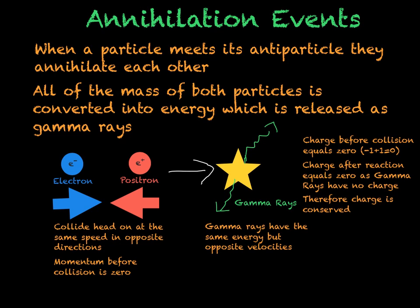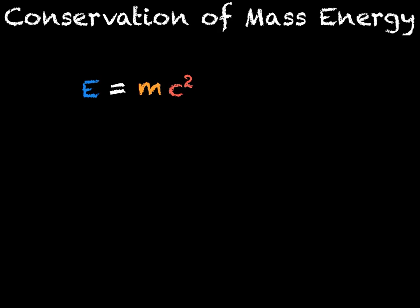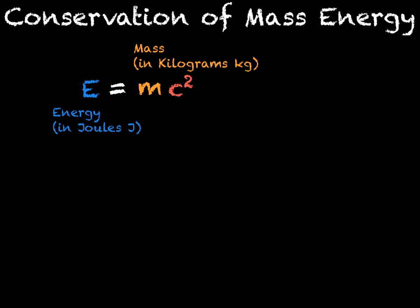The final thing we will look at is how mass-energy is conserved using Einstein's most famous equation. Einstein said that mass is a form of energy, so we use E equals mc squared, where E is energy in joules, m is mass in kilograms, and c is the speed of light, 3 times 10 to the 8 metres per second. Mass-energy is conserved in an annihilation reaction as all the mass of the electron and positron is converted into energy.